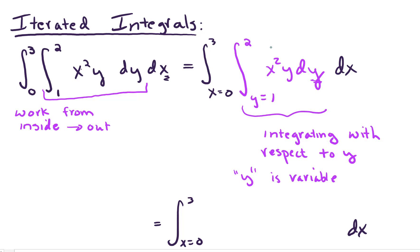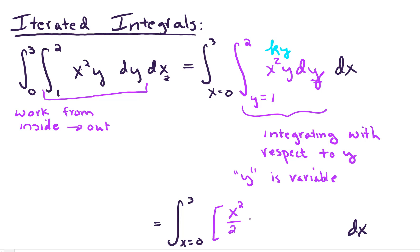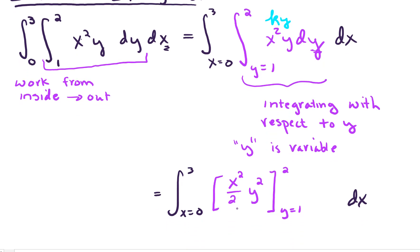The antiderivative of k times y would be k over 2 times y squared, and that's exactly what we get here: x² over 2 times y squared. We're going to evaluate that from y equals 1 to 2. And if you're unsure, we can take the partial derivative with respect to y and verify we get back to x² y — and sure enough, we do.